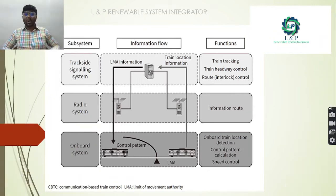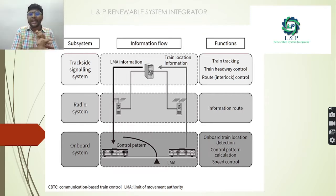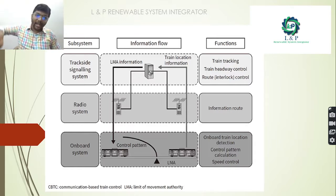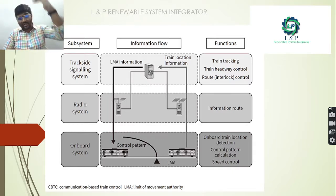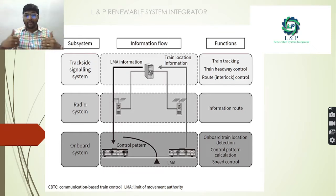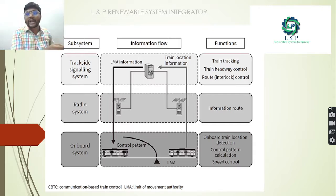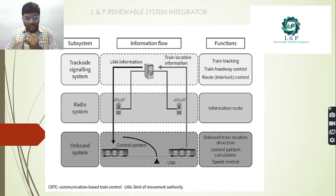The subsystems of CBTC are: train trackside signaling system, radio system, and onboard systems. Information flows from the train to the trackside signaling system and back, with the radio system handling communication in between. The trackside system provides train tracking, train headway control, and route control. The onboard system provides train location detection, control pattern calculation, and speed control.